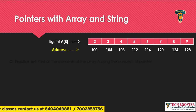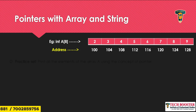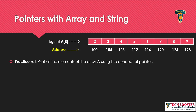We'll have a difference of four between addresses, and we've discussed all these things in a previous video, so I hope these concepts are clear. Now, to understand how your pointer will work with array, I've considered a practice set: print all the elements of the array using the concept of pointer. Let me open my Code::Blocks and try to solve this.